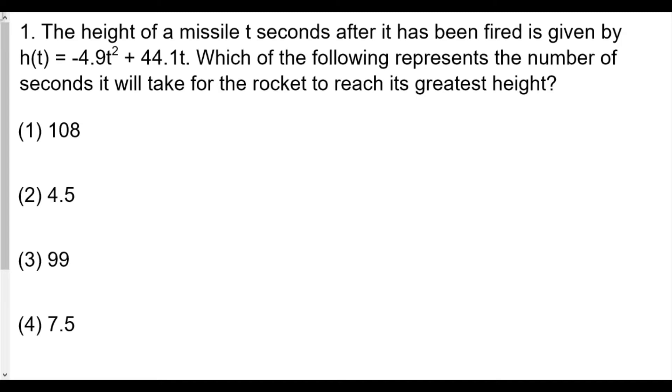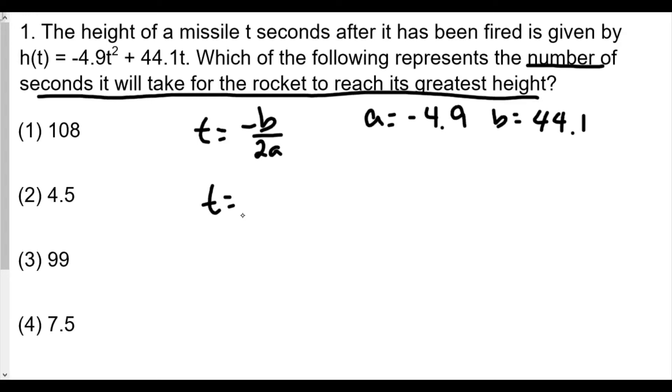For this problem, we're finding when the rocket reaches its highest height. We let t = -b/(2a). Since our a-value is -4.9 and our b-value is 44.1, we have t = -44.1/(2×-4.9). When we calculate this, we get 4.5. So after 4.5 seconds, the missile reached its highest height. The answer would be choice 2. If we were to plug 4.5 into the function, we might get one of the other answers.